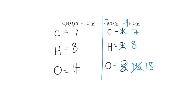Now I can see carbons are good, hydrogens are good, but I have 18 oxygens on the right and only four on the left. I have to be careful here — I'm not going to touch the compound where carbon and hydrogen appear, since those are already balanced at seven and eight. I'll just work with the O2. I have two oxygens there and I need 18 total, so 18 minus 2 is 16 more. Putting an 8 in front of O2 gives me 8 times 2 equals 16, plus that 2, giving me 18. Everything is balanced: 7, 8, and 18.